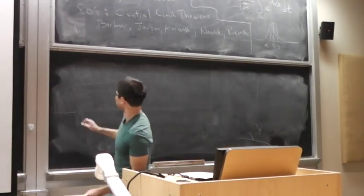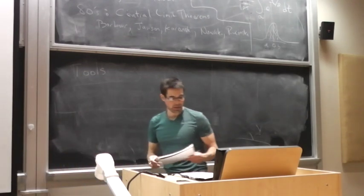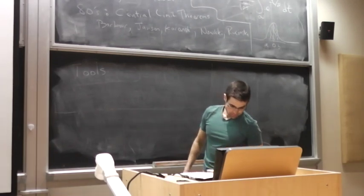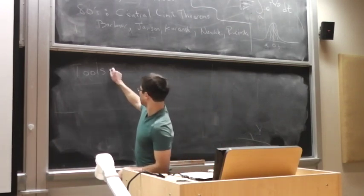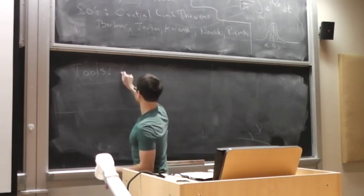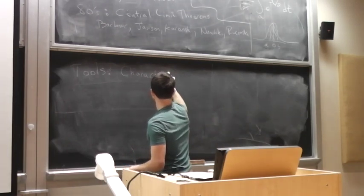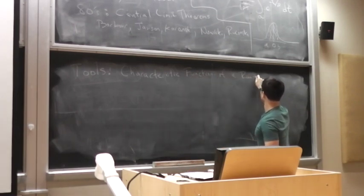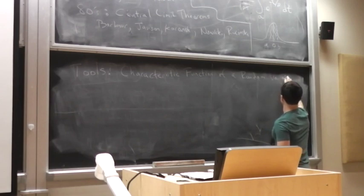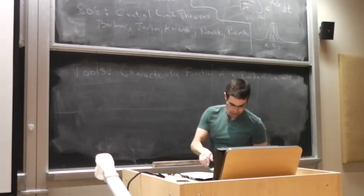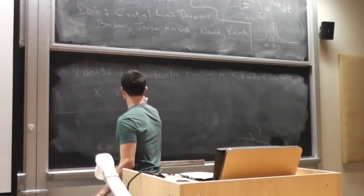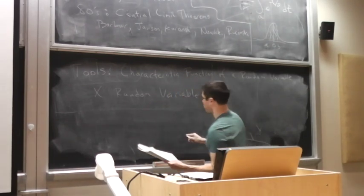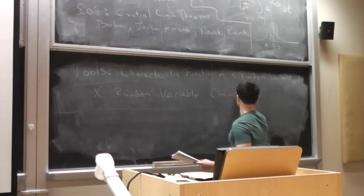So what are the tools we're going to need? The first one is the characteristic function of a random variable — this is a classical object. Let X be a random variable. Then the characteristic function of X is defined as follows.